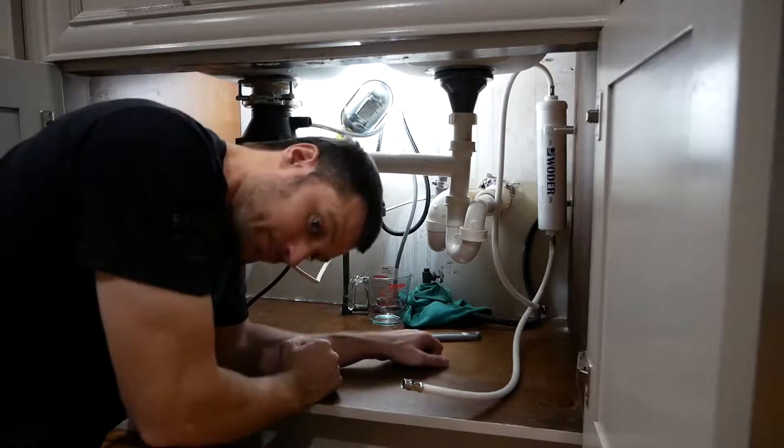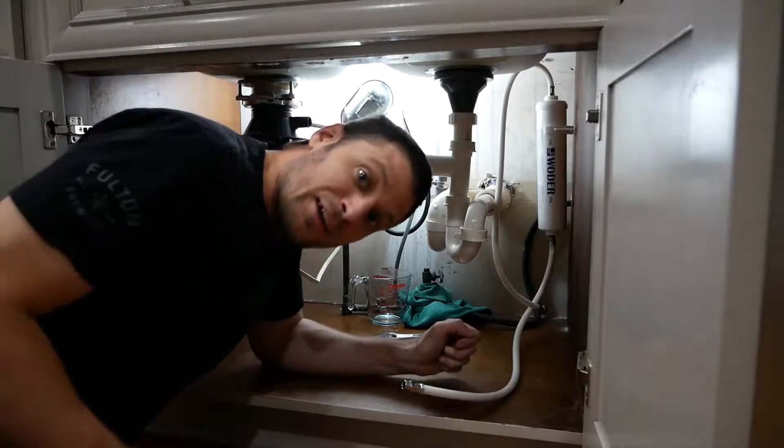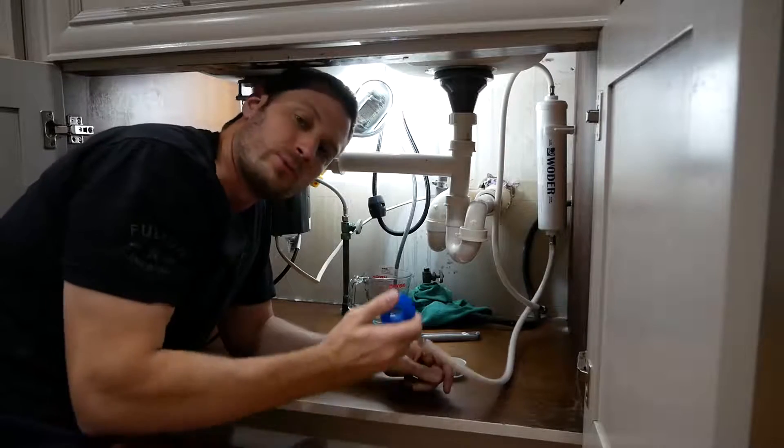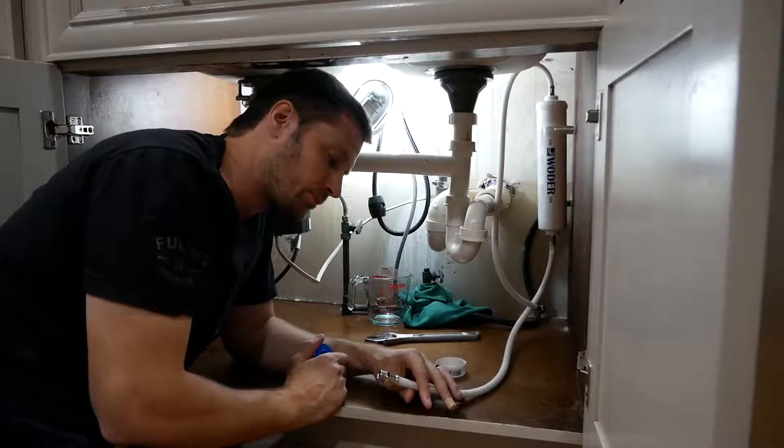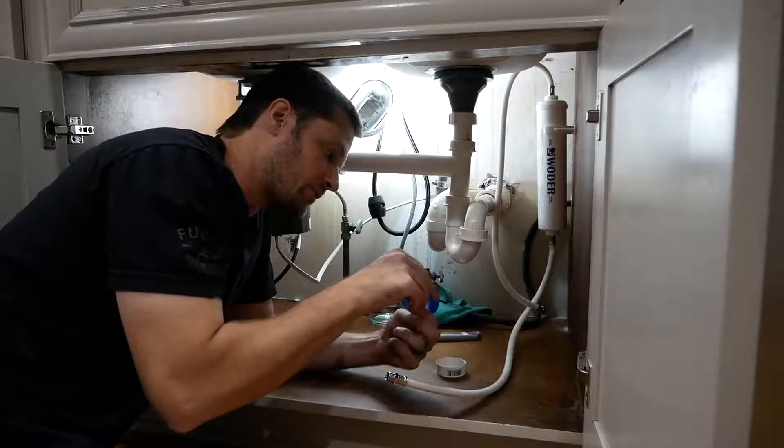I'm going to want to use some of my tape if I can find it. So this is some plumber's tape. I'm just going to wrap this around the threads. This is going to help with just making sure there aren't any extra leaks. So you can pull a little bit of this out.